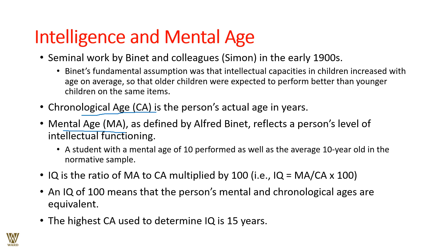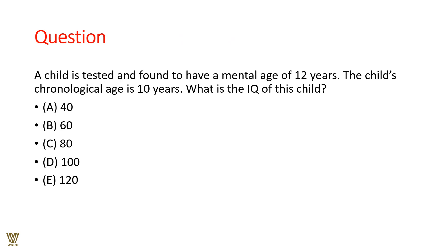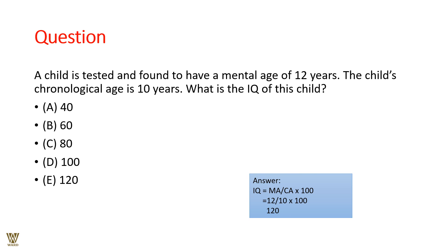If you are 10, 50, or 90 years old and you think and behave at exactly that age level, your IQ is 100 — perfectly normal. The highest chronological age used in the denominator was traditionally capped at 15 years. For a worked example: a child has a mental age of 12 and a chronological age of 10. IQ = (12 ÷ 10) × 100 = 120. The child is smarter than their chronological peers.